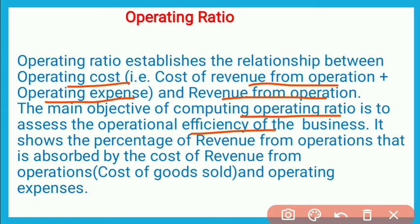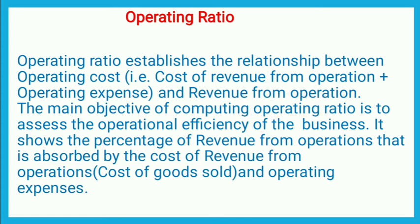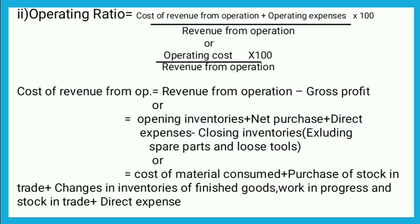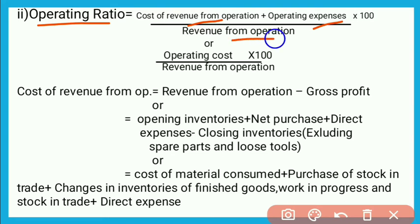Now, how we calculate the Operating Ratio. इसको calculate करने के लिए हम formula apply करेंगे: Operating Ratio = (Cost of Revenue from Operations + Operating Expenses) / Revenue from Operations × 100. इसके अलावा cost of revenue from operations और operating expenses की जगह लिख सकते हैं: Operating Cost / Revenue from Operations × 100.